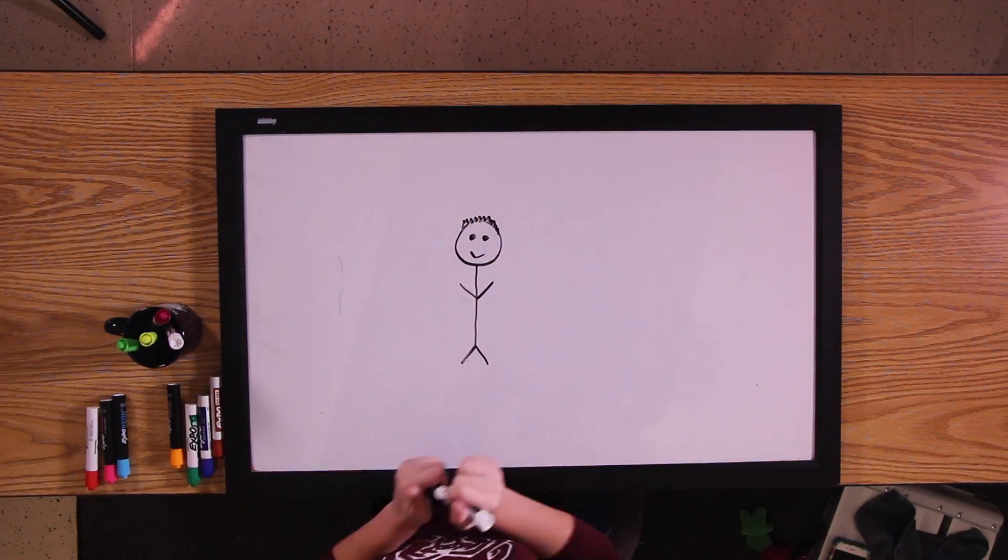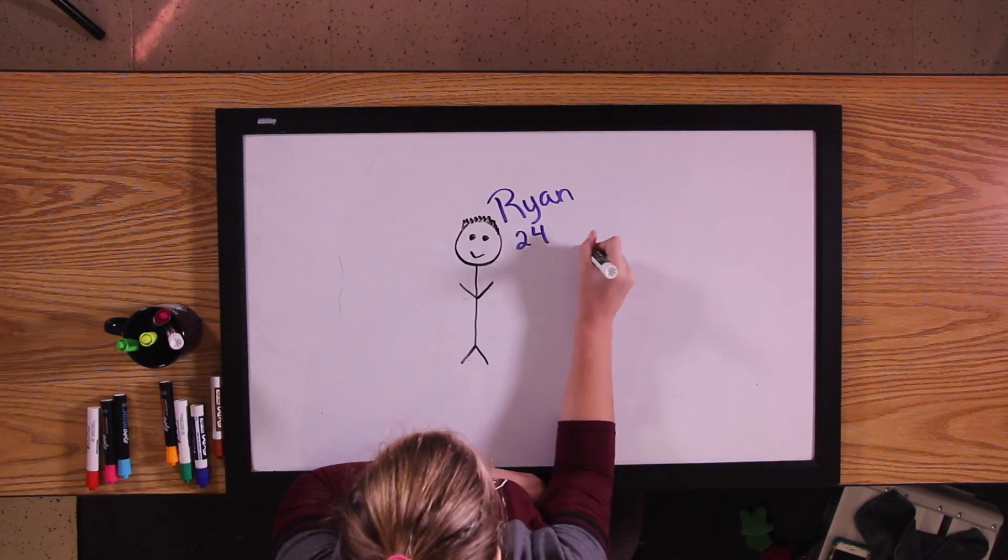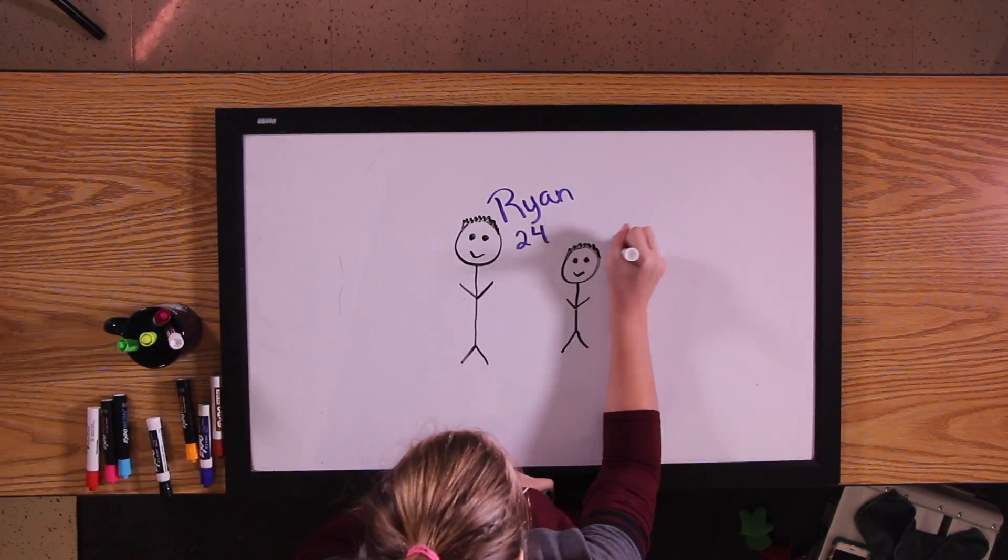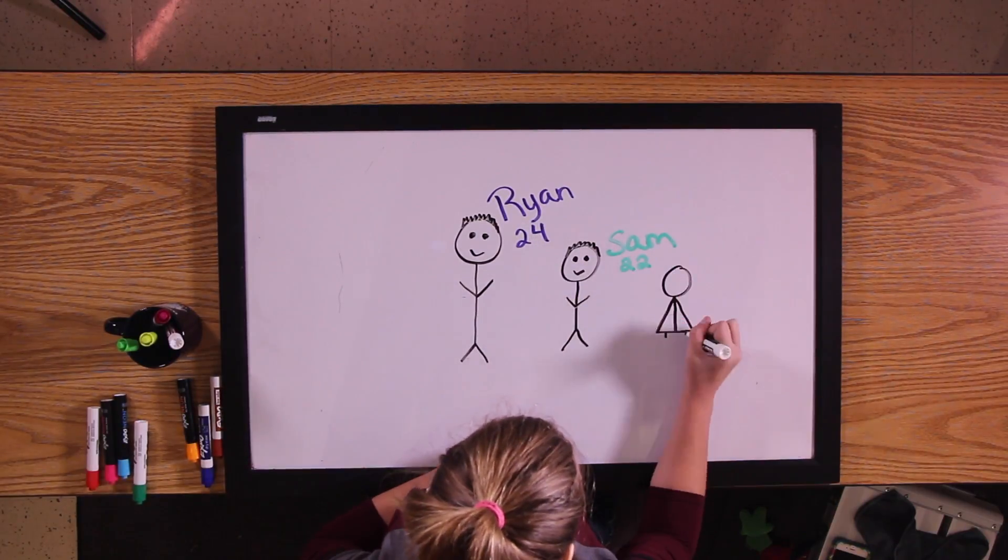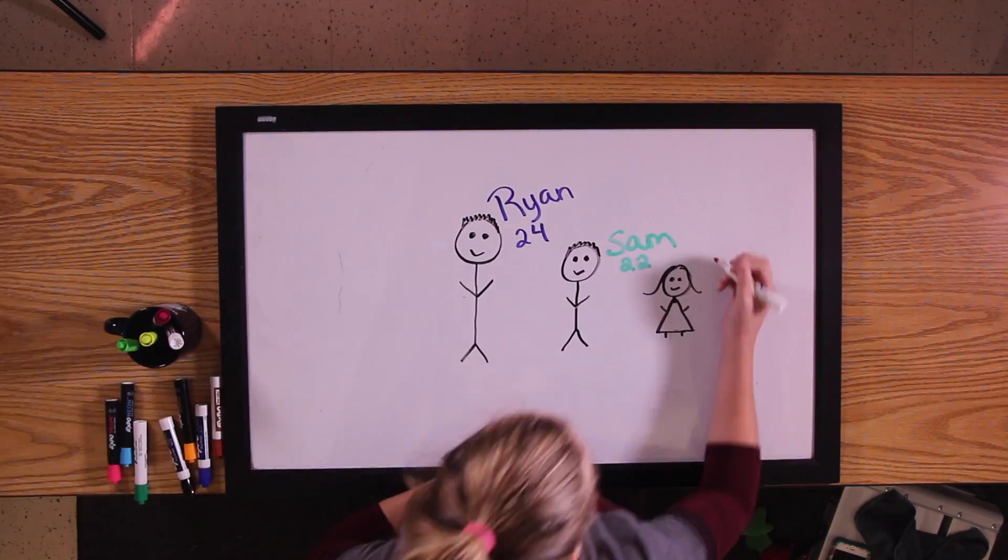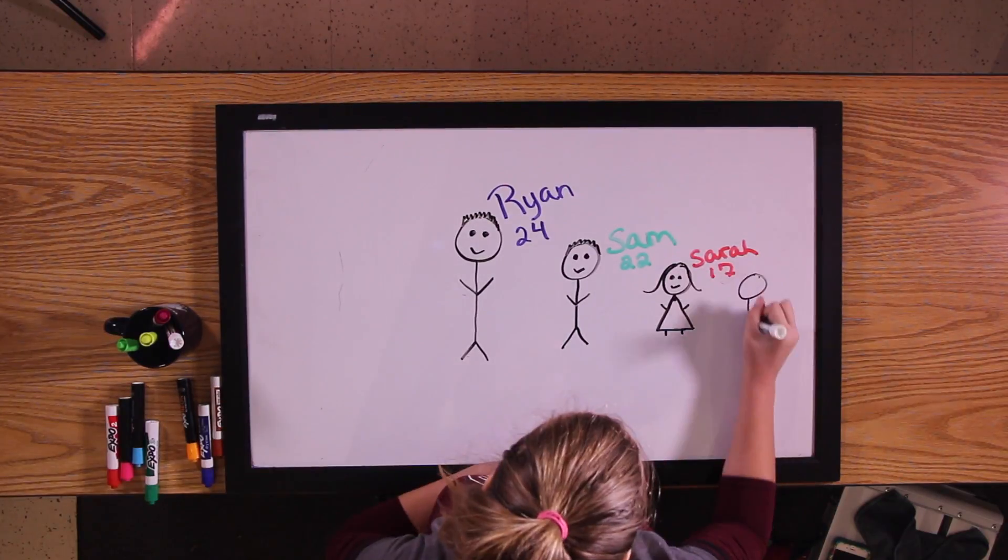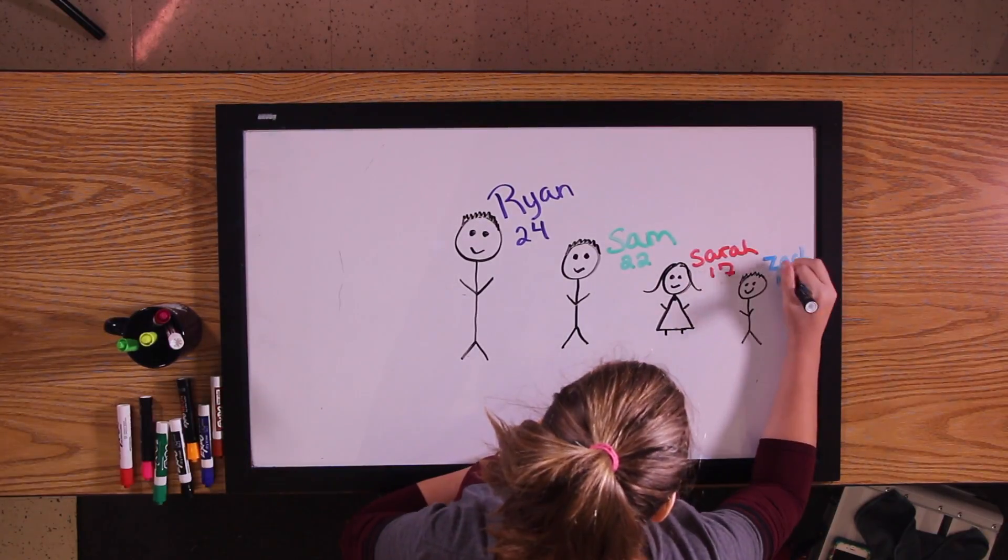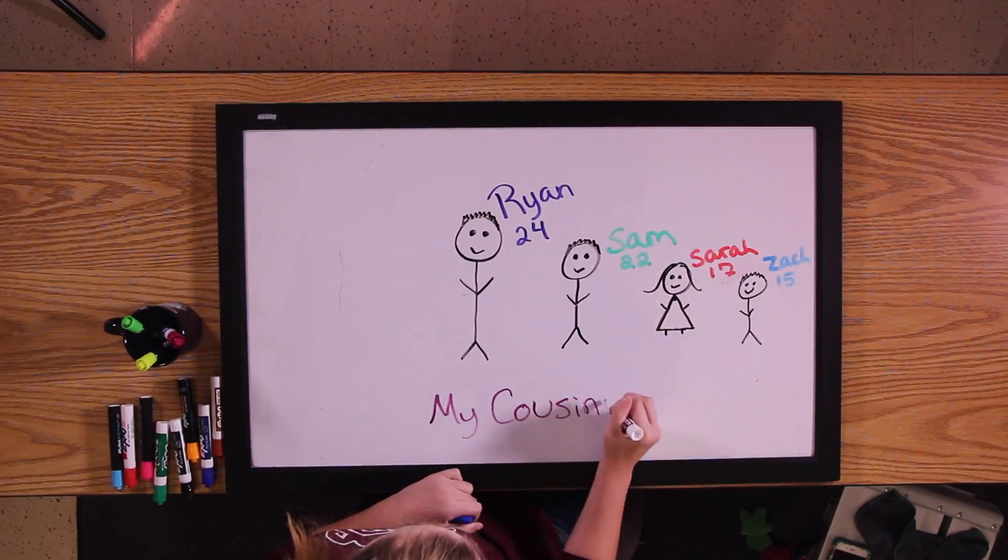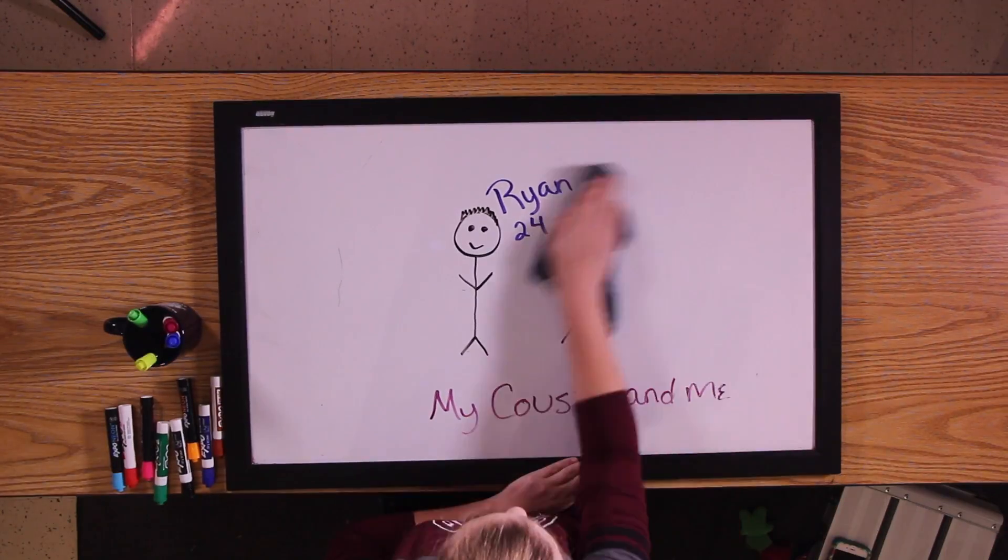My cousins are Ryan, he is 24 years old. Sam, who is 22 years old. And then there's me, who is 17 years old. And last but not least, Zach. He is 15 years old.